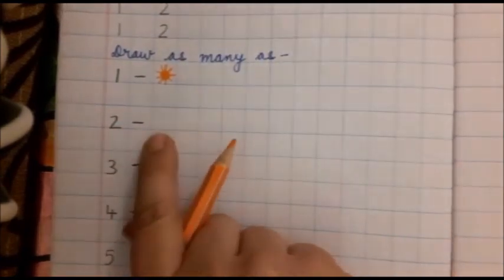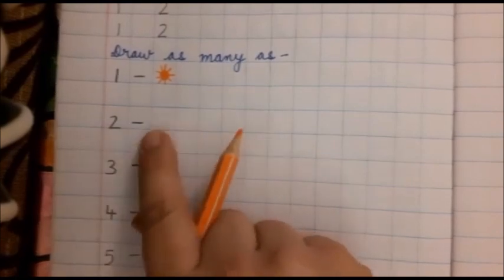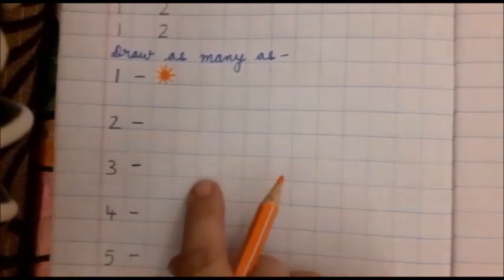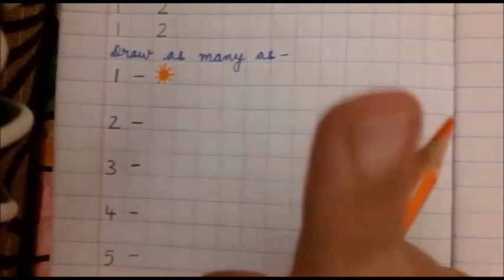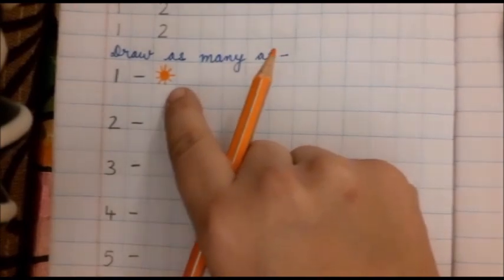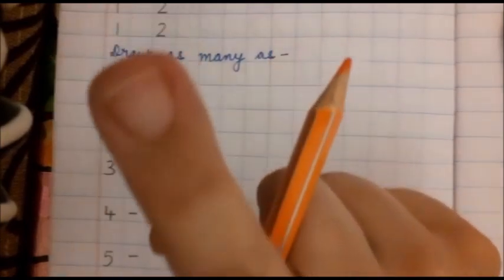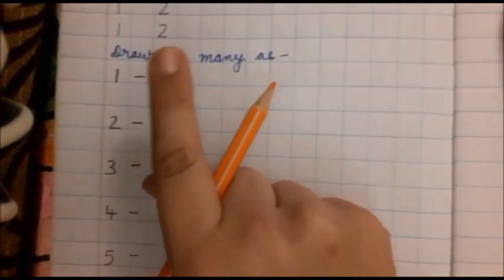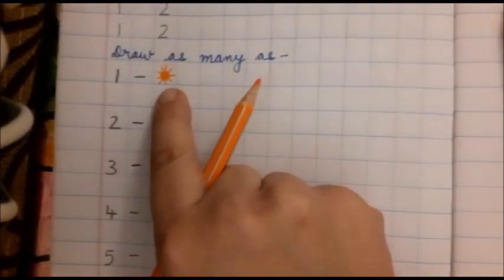Because there is only one sun. Will I draw two suns here for number 2? Will I draw two suns or three suns? No. Because there is just one sun. So, Anubha ma'am thought ki number 1 ke aage, main ek sun bana deite hoon. Because there is only one sun. So, one sun. I have drawn the sun here.